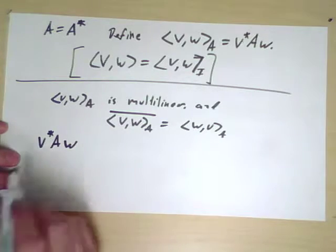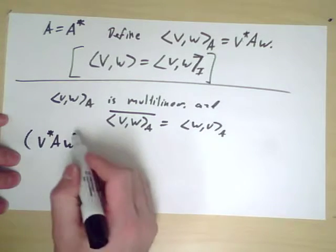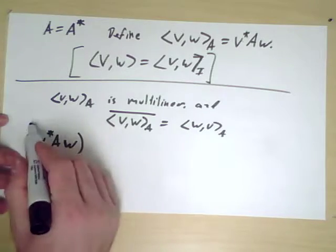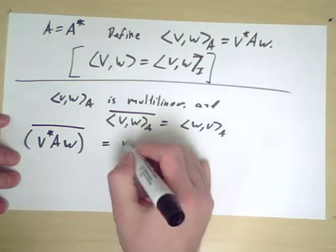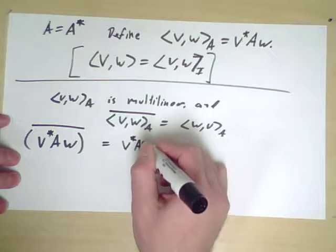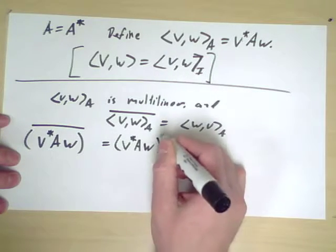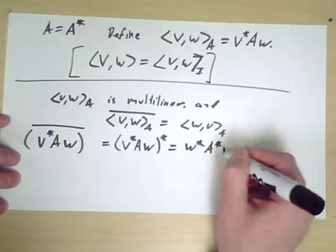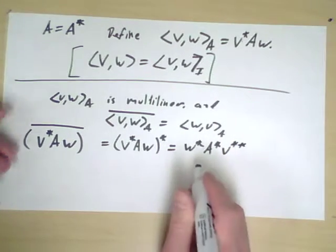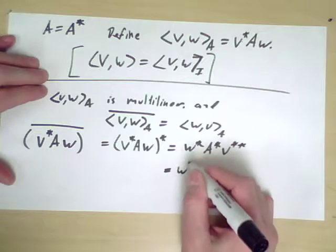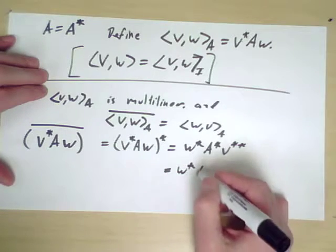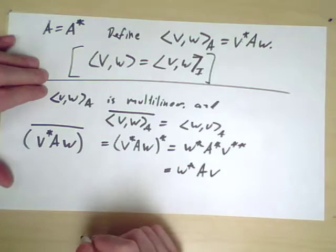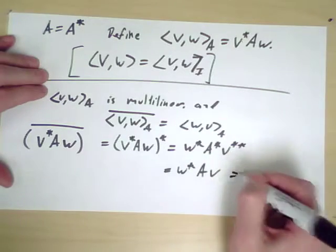V star A W is a complex number, and for a complex number, taking a conjugate is the same thing as taking a star if I think as a one-by-one matrix. So that's W star A star V star star. And that of course is W star A star equals A and V star star is V. And we're done.